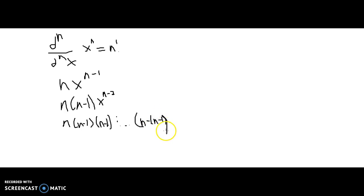So x to the 0, which is also just 1. And this entire thing here can be rewritten as n factorial, because it's n times n minus 1 times n minus 2.